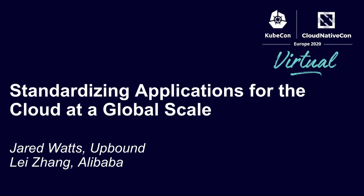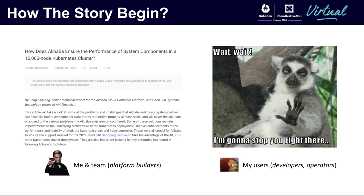I will start from what problems we are facing and how we solved them. The whole story began in 2018 when the team at Alibaba started to build one of the largest Kubernetes clusters in the world. The goal was to serve developers and operators throughout the company and support its Double Eleven sales festival, which is huge. The outcome was pretty good — they even published an awesome blog that attracted a lot of attention and gave confidence to the community that Kubernetes works at super large scale.